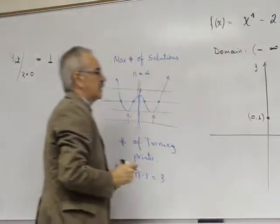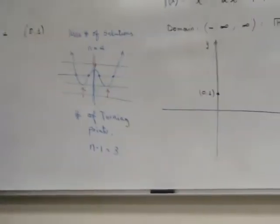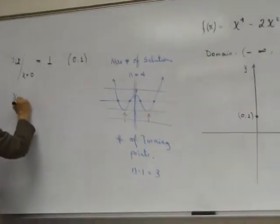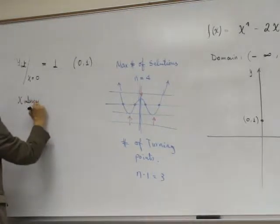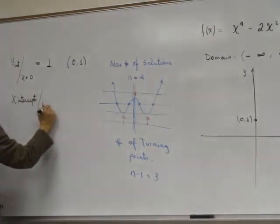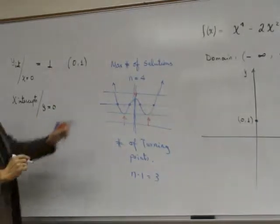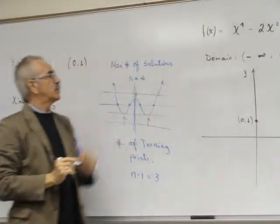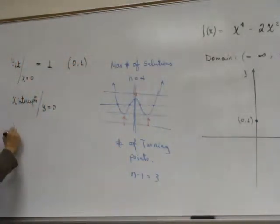Now let's check where are located x intercepts. They exist when y equals to 0, so make the function equals to 0: x to the 4 power minus 2x squared plus 1 equals to 0.